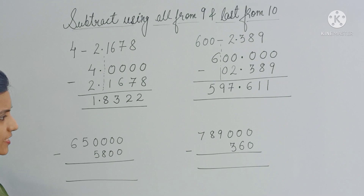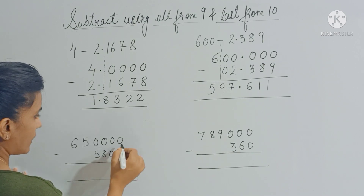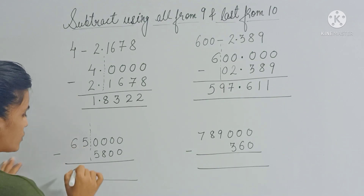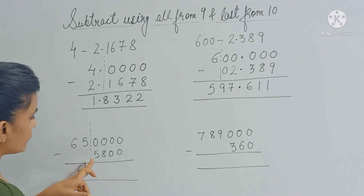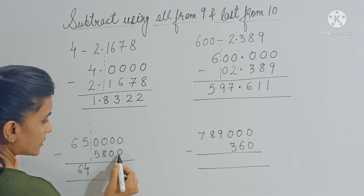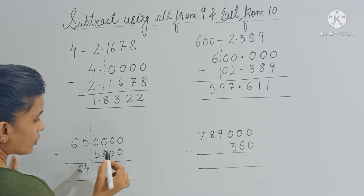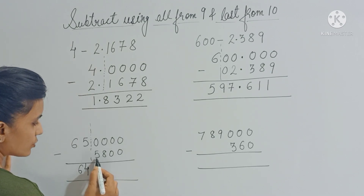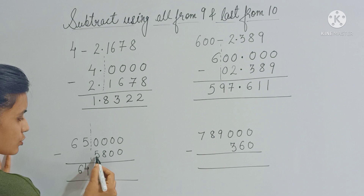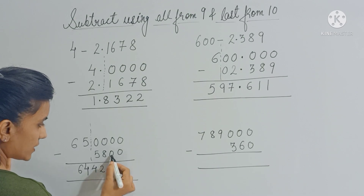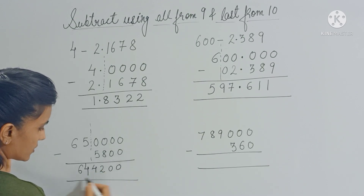Now let's see some special cases. Step 1 remains the same — separate all the zeros. Draw a line here. Now 65 minus 1 gives you 64. Apply 'all from 9, last from 10', but the last two digits of the subtrahend are 0 — so apply the rule only for the non-zero digits: 5 and 8. So 5 plus 4 gives you 9 and 8 plus 2 gives you 10. Copy the two trailing zeros as-is. That is your answer.